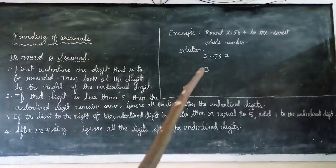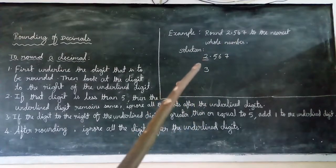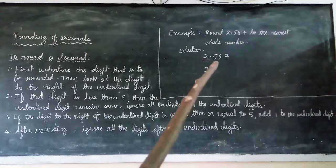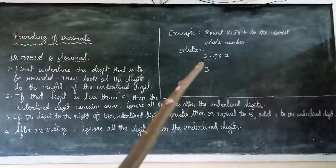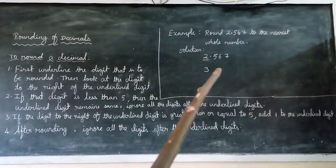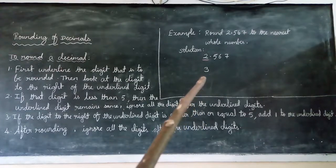See this example: round 2.567 to the nearest whole number. We underline the ones digit. The digit to the right of the underlined digit is 5, which is greater than or equal to 5. So we add 1 to the underlined digit: 2 plus 1 equals 3. The remaining digits to the right are ignored. The answer is 3.